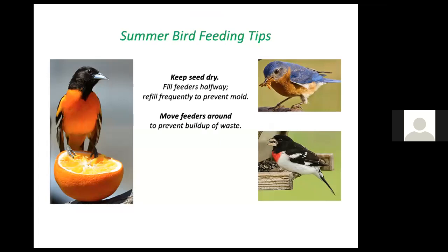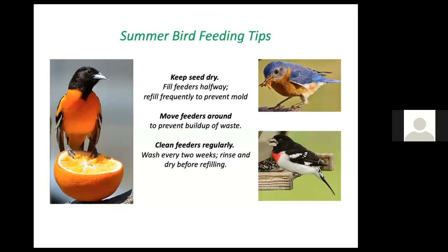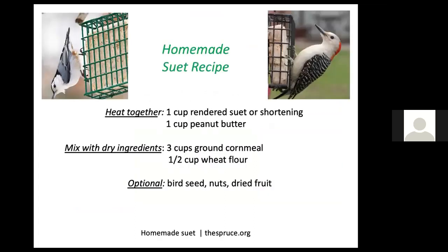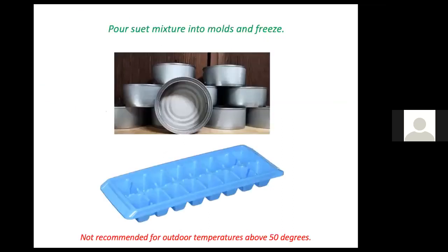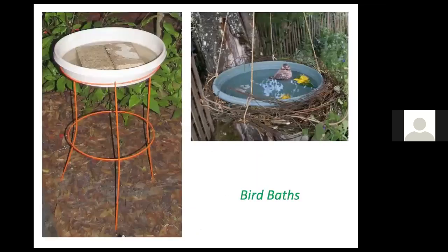Move your feeders around to prevent the buildup of waste when seeds drop to the ground; they could become moldy and be a hazard to birds' health. Clean feeders regularly — wash every two weeks, rinse and dry before refilling. You can make homemade suet by heating shortening and peanut butter until melted, mixing in dry ingredients, pouring into molds such as empty tin cans or ice cube trays, and freezing for a couple of hours. Do not use suet above 50 degrees, as it will turn rancid at warm temperatures.